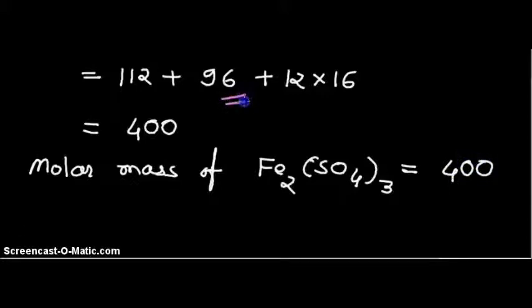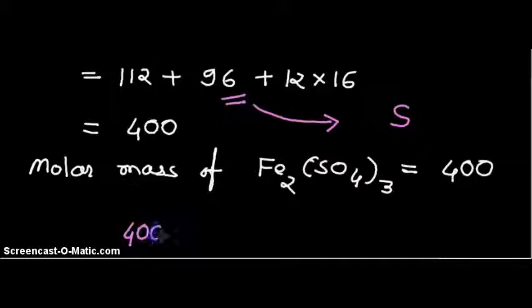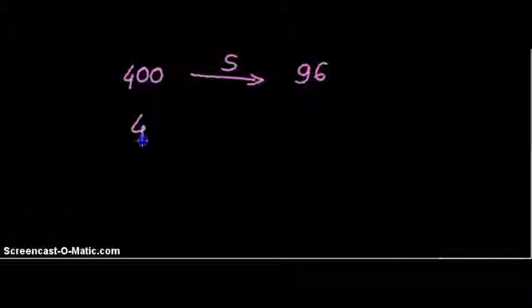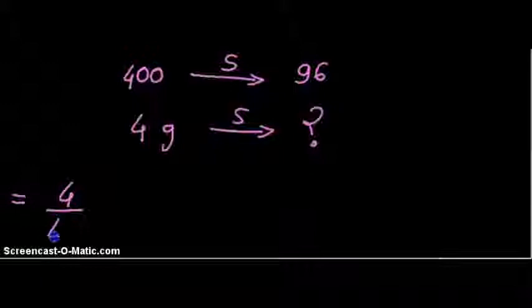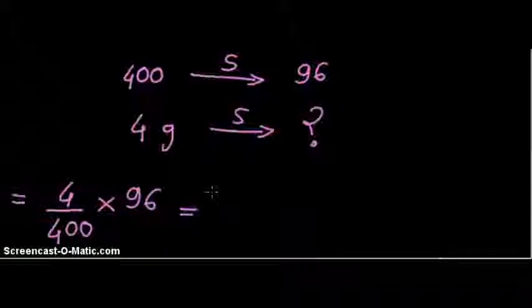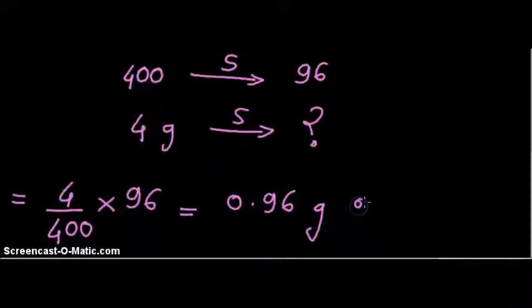As you can see, 96 pertains to sulfur, so in 400 the part of sulfur is 96. So in 400 grams, 4 grams — the part of sulfur will be: 4 divided by 400 into 96, so we get 0.96 grams, and that is the answer.